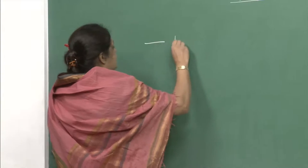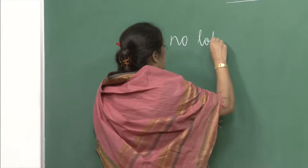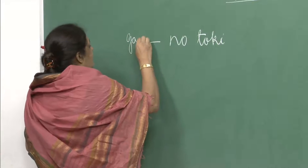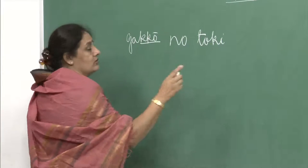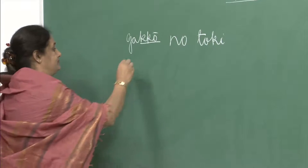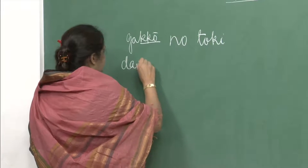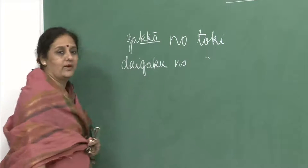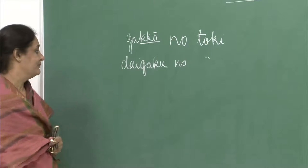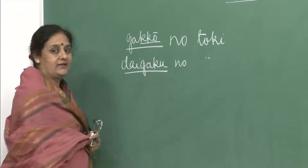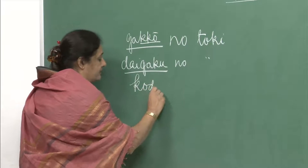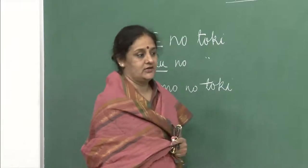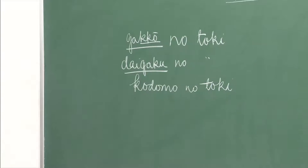The first grammar point is dash no toki — toki means at that time. For example, gakkou no toki means when I was in school. Daigaku no toki means when I was in university. Or kodomo no toki means when I was a child. You can use toki like this very, very freely.